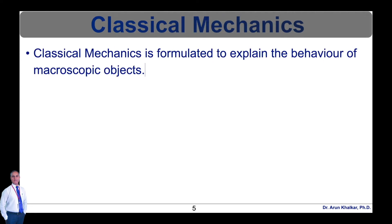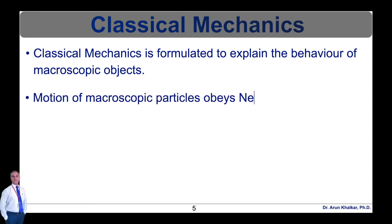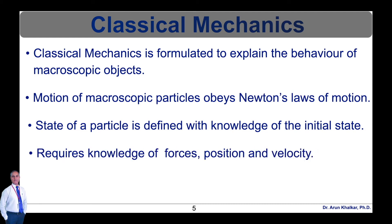In classical mechanics, the following points are very important: Classical mechanics is formulated to explain the behavior of macroscopic objects. Motion of macroscopic particles obeys Newton's laws of motion. State of a particle is defined with knowledge of the initial state. It requires knowledge of forces, position and velocity. Prediction of future states is possible.